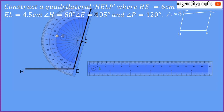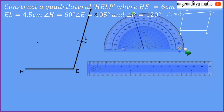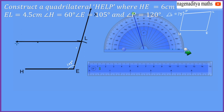We have to denote an angle of 75 degrees at L and let it be ray LY. Put a point there and join the point and L. We will get ray LY. So this angle at E is 105 degrees and this angle at L is 75 degrees.